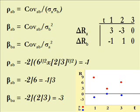So again the correlation coefficient is minus one, but predicting a to b we divide by the variance of a which is six, gives us minus a third.